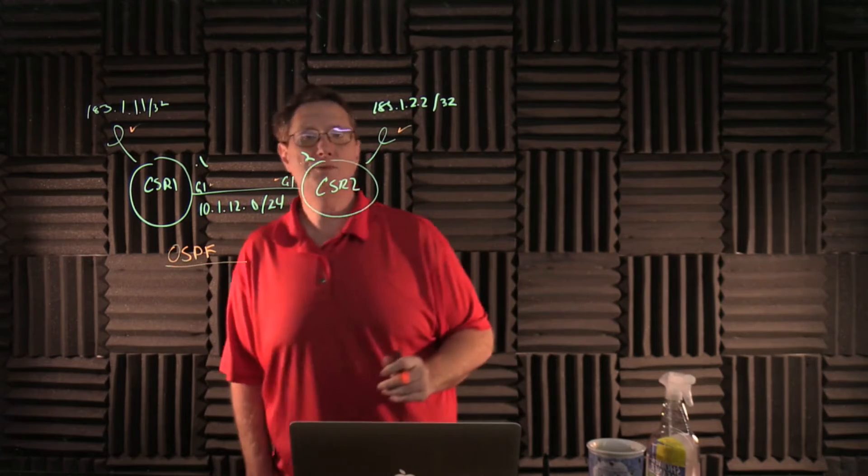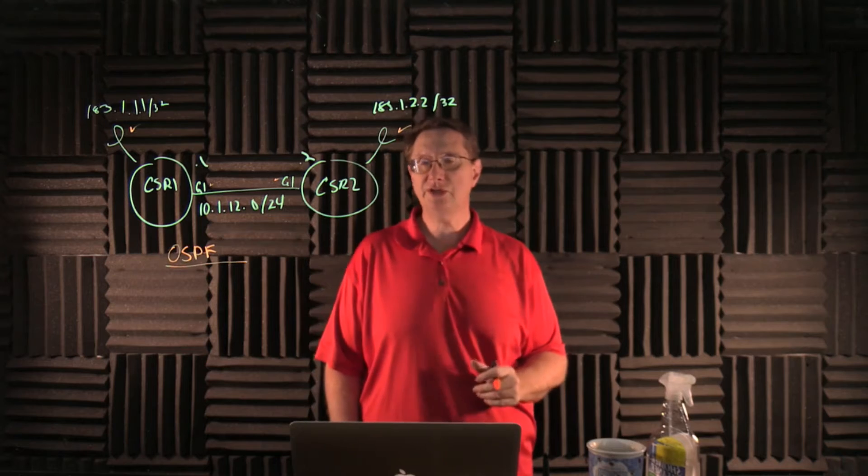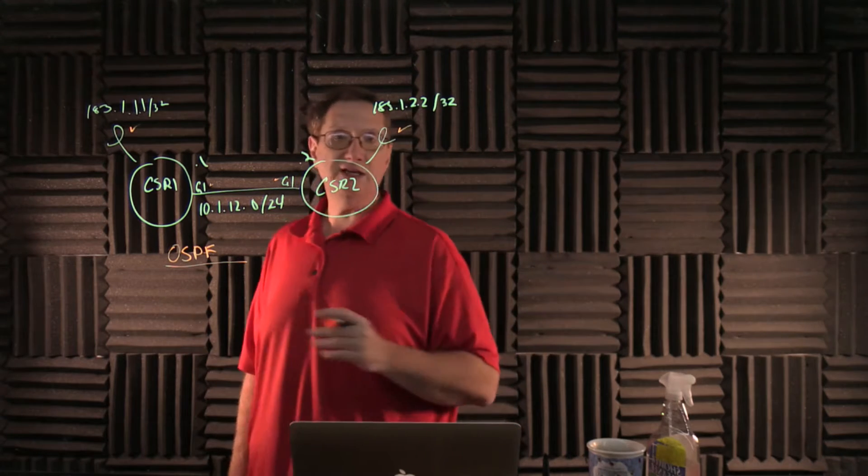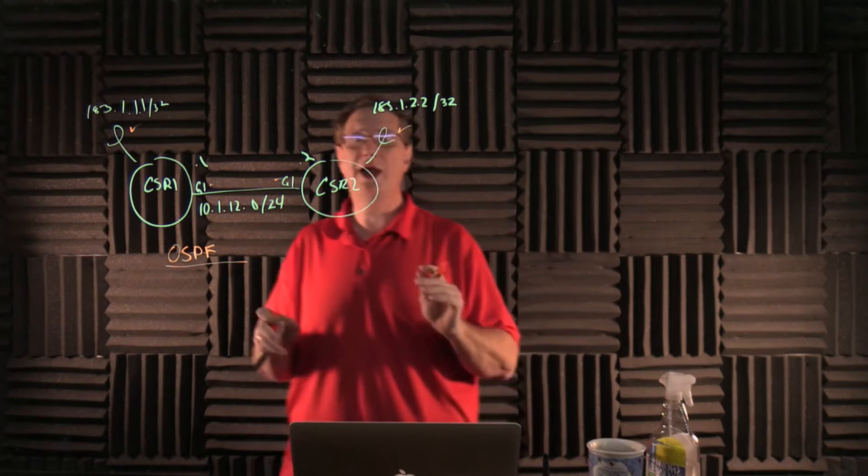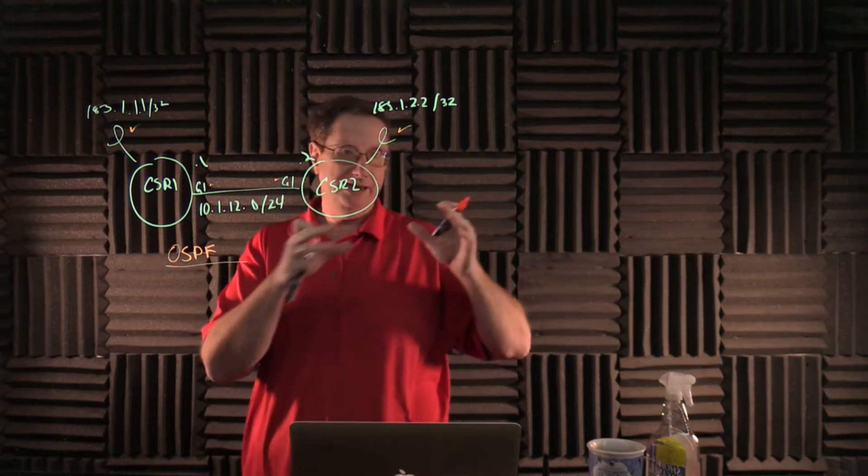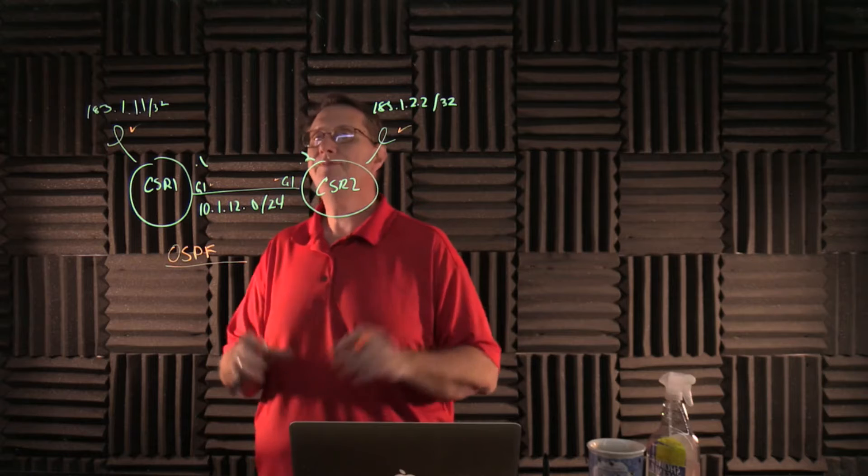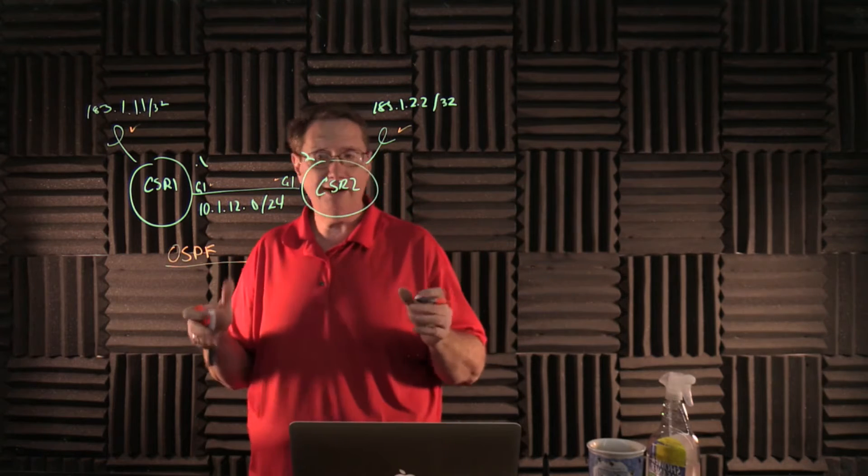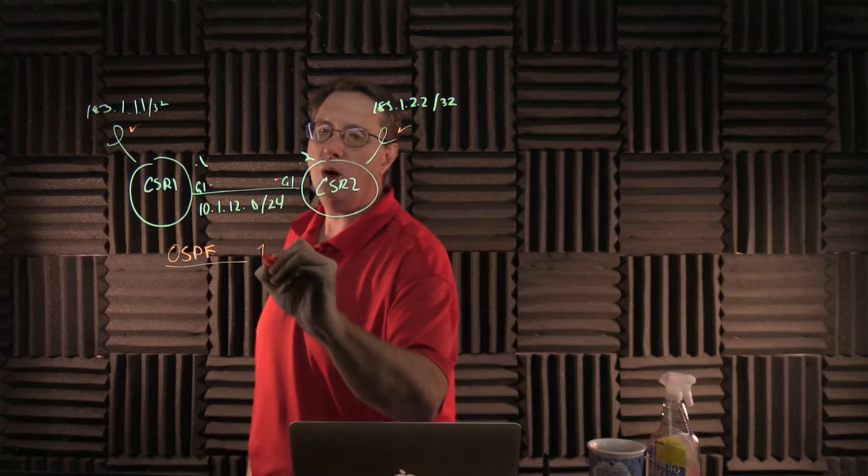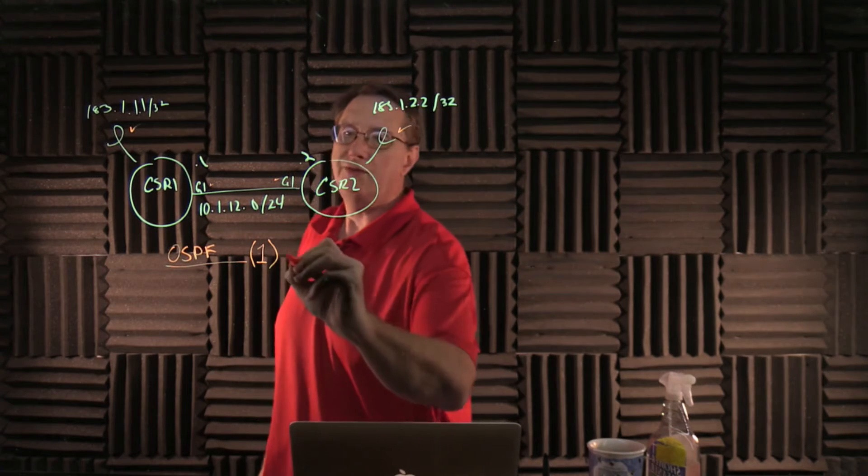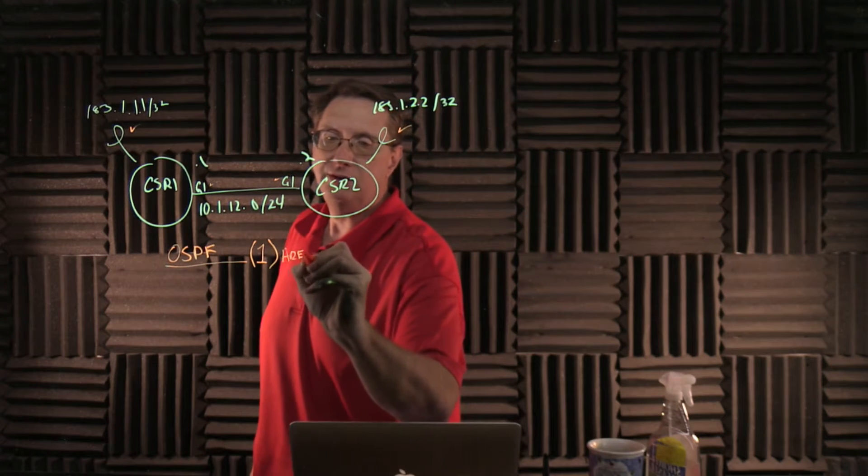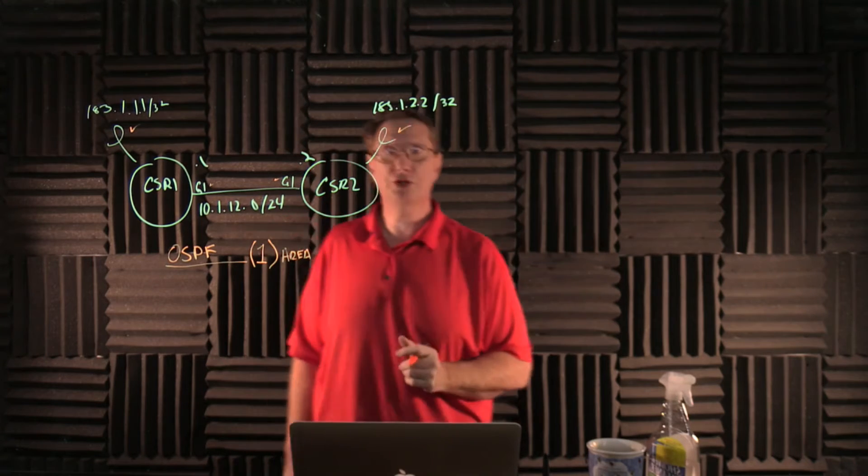OSPF is going to be the routing protocol of choice. And for the purposes of this configuration, to demonstrate like we discussed in the theoretical component that we only need to have an area zero for full functionality, I'm going to begin with OSPF area one. So that's going to be the area we're using in this particular portion of our demonstration.